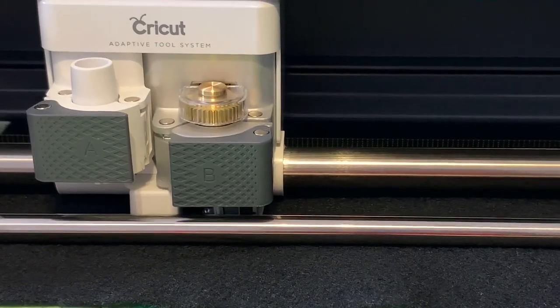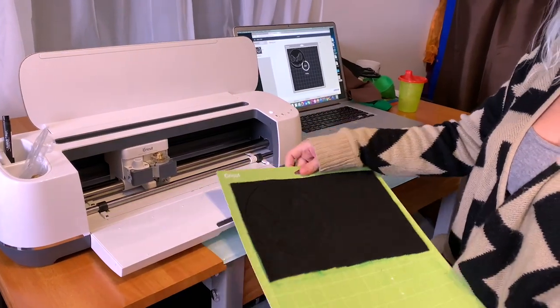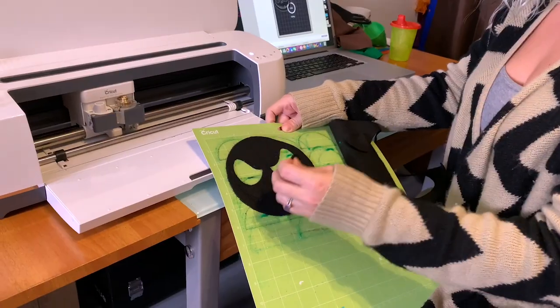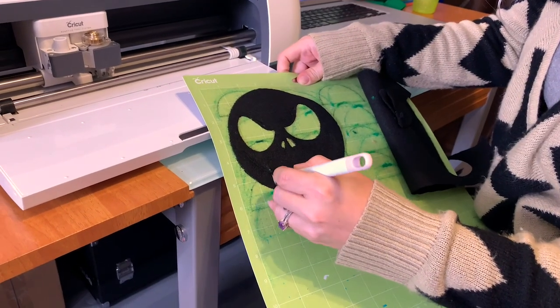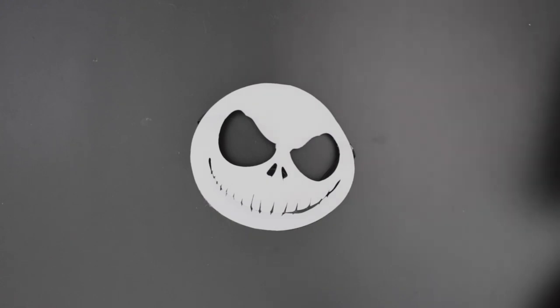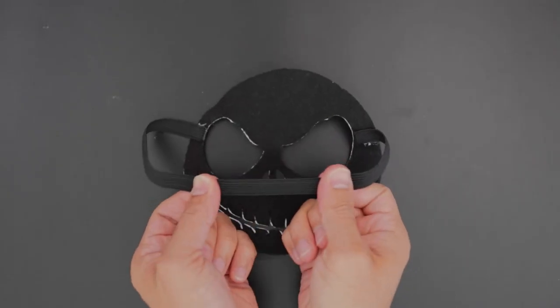We used a vinyl cutter to make a skull mask out of black felt and glow in the dark vinyl. This can be layered on top using a heat press. An elastic headband can be hot glued to the sides for easy wearability.